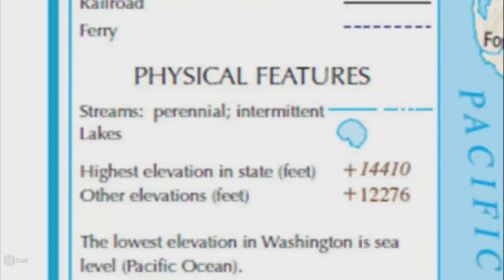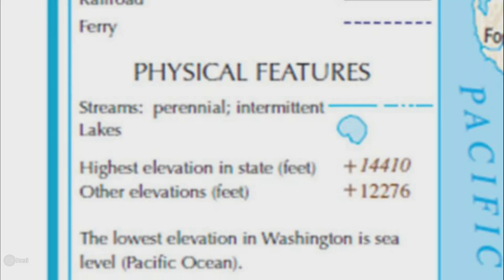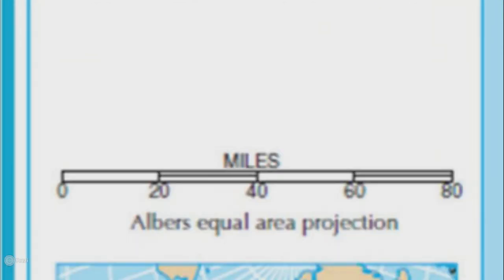This part of the key shows symbols for streams, rivers, lakes, mountains, and the ocean. This part of the key shows distance in miles.